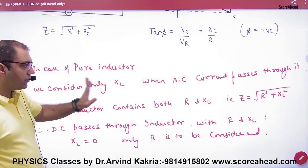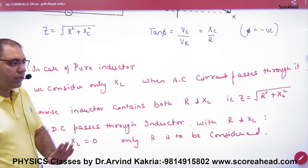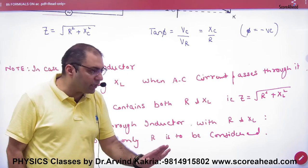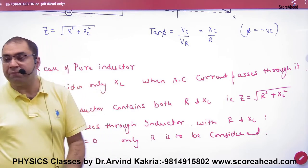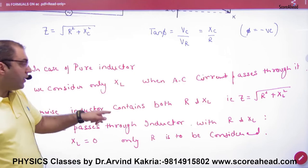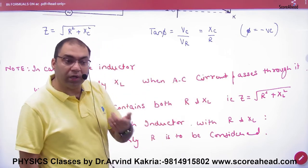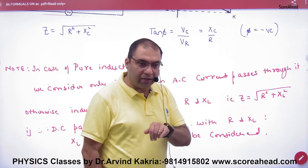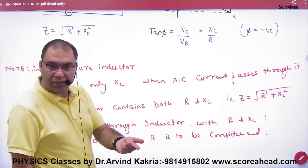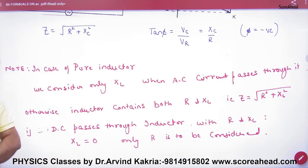So pure inductor means you don't have to take R. What do you have to take? XL. Just. Pure inductor does not take role of R. If it's not a pure inductor, then it will be R and XL. Then what does total resistance mean? Impedance Z. That is under root of R square plus XL square. If pure inductor, you don't have to take R.